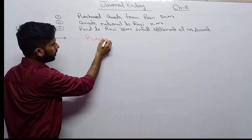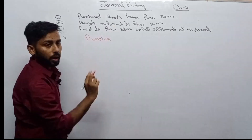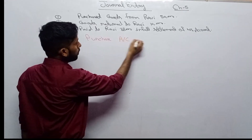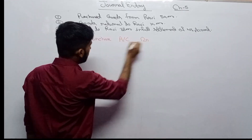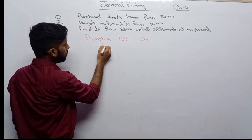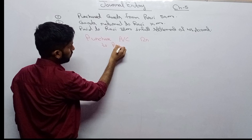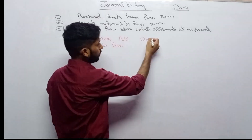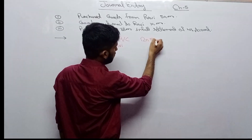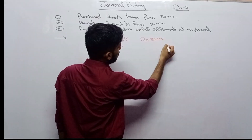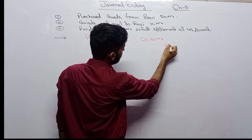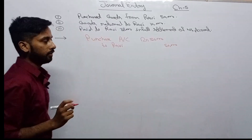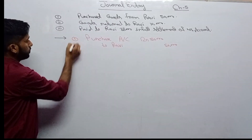Purchase account debit — it's not a cash transaction, so Ravi's account will be credited. Purchase account debit, to Ravi, 50,000. Write 50,000 on both sides. That's done — easy, right? That is number one completed.